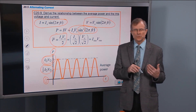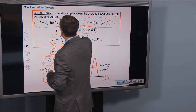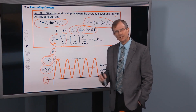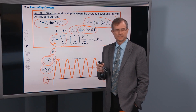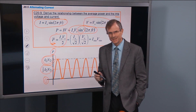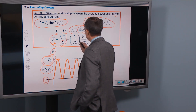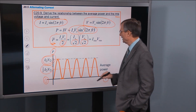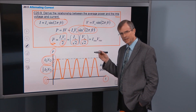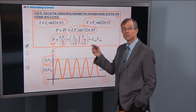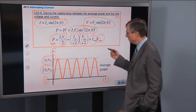We want to relate average power to the RMS voltage and current. Using the trick that 2 = √2 × √2, we can place one √2 under I₀ and one under V₀. Then I₀/√2 is the RMS current and V₀/√2 is the RMS voltage. So the average power equals I_RMS times V_RMS.